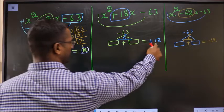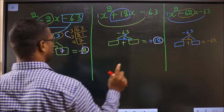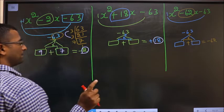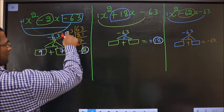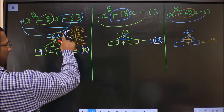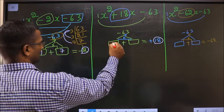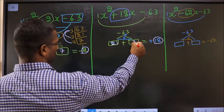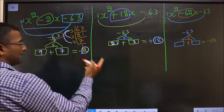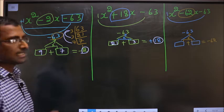For the second expression, I need to get 18. That could only happen if the numbers are 21 and 3, since 21 minus 3 is 18, and 21 into 3 is 63.